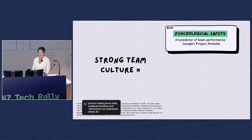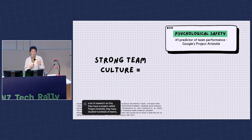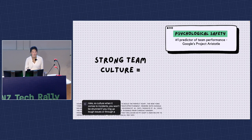So what makes up a strong team culture? Google's done a lot of research on this — they had a project called Project Aristotle that studied hundreds of teams and found that psychological safety was by far the most important predictor for a high-performing team. This means a sense of shared trust that team members are safe to take risks — things like a blameless culture when it comes to incidents, or knowing you won't be shunned if you bring up tough issues, propose a new idea, or ask for help without anyone thinking you're silly.